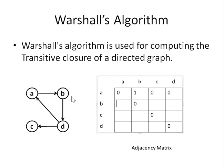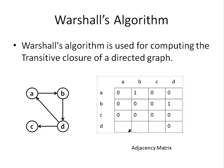For vertex B: B to A — no path, so 0. B to C — no path, so 0. B to D — there is a path, so 1. For vertex C: C to A is 0, C to B is 0, C to D is 0. For vertex D: D to A — yes, there is a path, so 1. D to B — no path, so 0. D to C — there is a path, so 1. D to D has no self-loop, so 0.